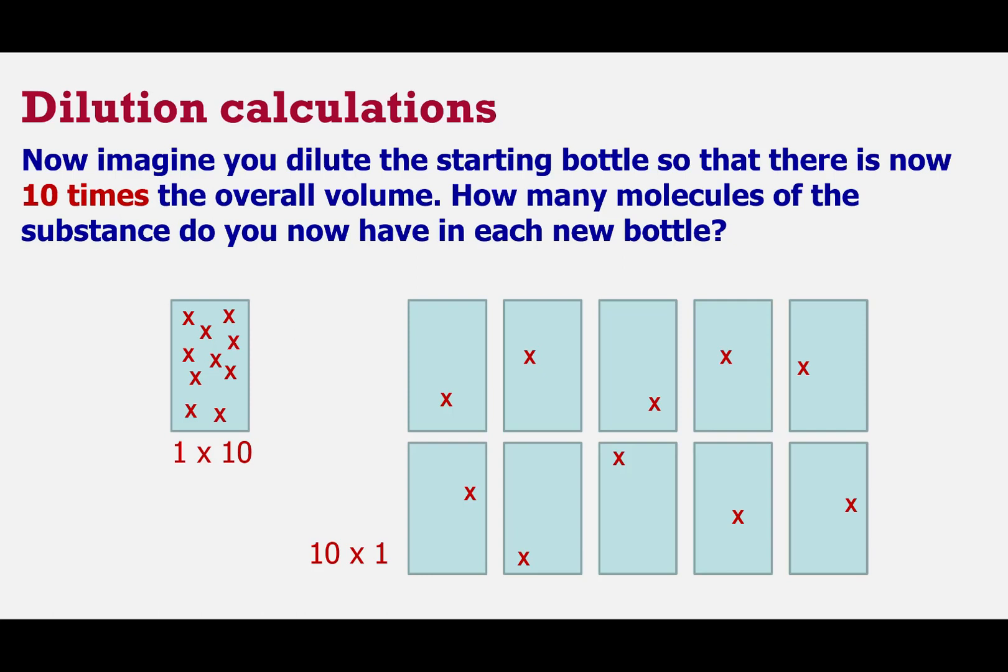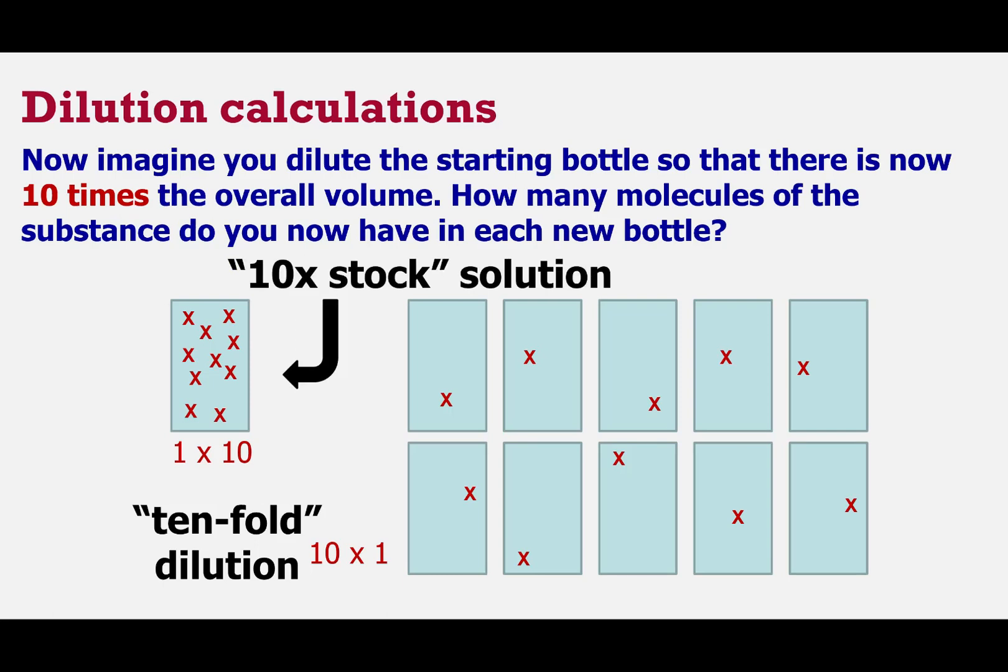Now, just before we move on from this, a couple of jargony phrases that will crop up. When we go from having one volume to adding nine more of the same volume, so we've got 10 volumes worth overall, that's described as being a tenfold dilution. So in other words, if we had one volume and we added 99 volumes of water to that, that would be a hundredfold dilution. So that's what that phrase means. And secondly, if the final volume that we needed for a reaction was one molecule per bottle, as it is on the right hand side here, then we might describe that initial solution as being a 10 times stock. It's got a concentration that's 10 times what we would need for a reaction.